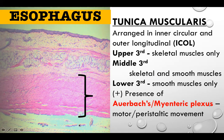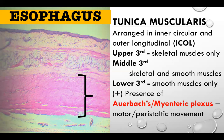The tunica muscularis or muscularis propria of the esophagus is subdivided into three regions: upper third, middle third, and lower third. The upper third is comprised of skeletal muscles only. The middle third is composed of both skeletal and smooth muscle. The lower third is comprised of smooth muscles only. Exam questions may ask what type of muscle is present in a specific area.